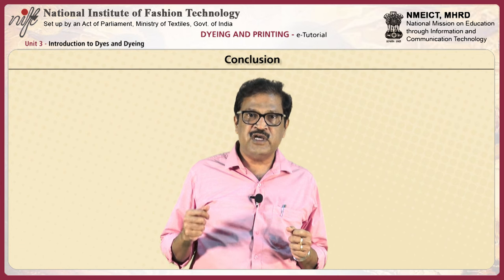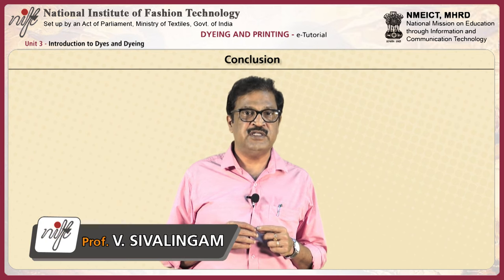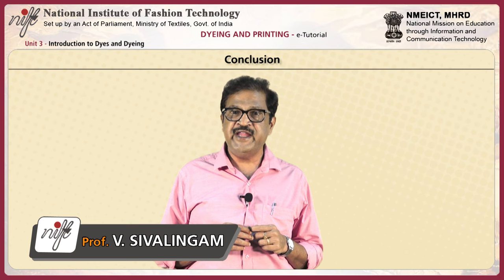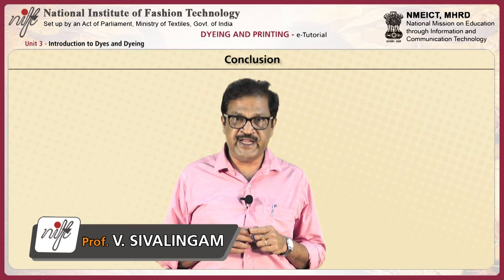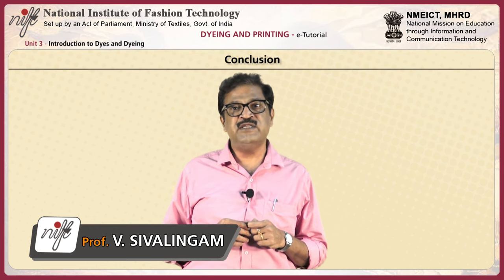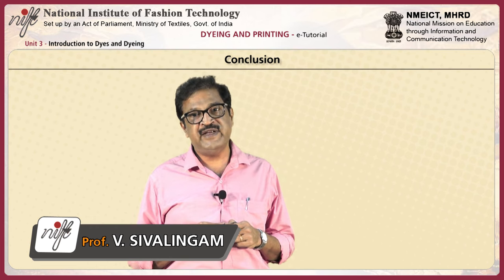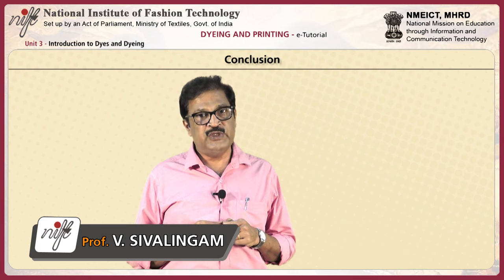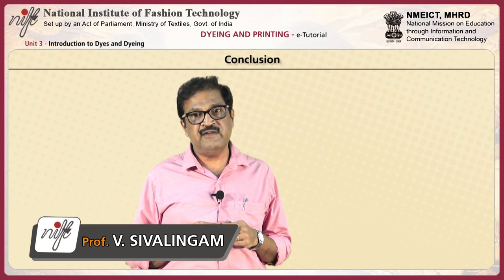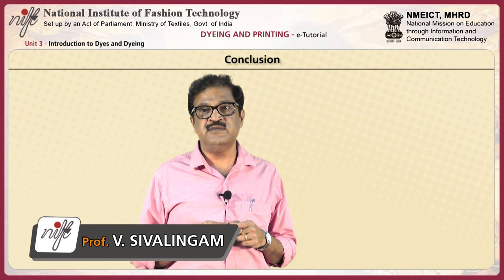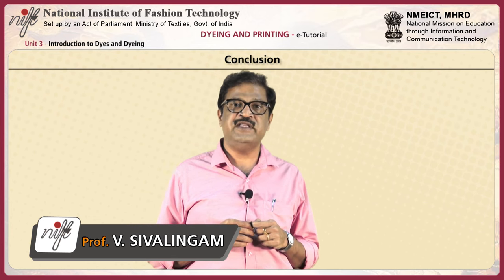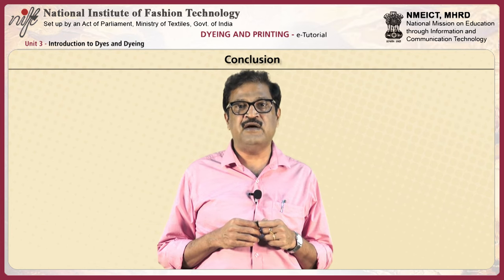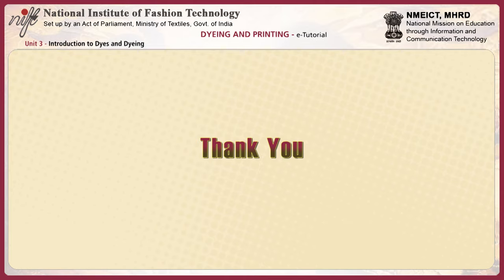You have come to the end of this unit. To summarize, in this unit you have learned about the objectives and importance of dyeing, as well as the similarities and differences between dyes and pigments. You have also been familiarized with frequently used terms in the dyeing process, learned how dyes are classified, and reviewed the important features of various classes of dyes. Thank you.